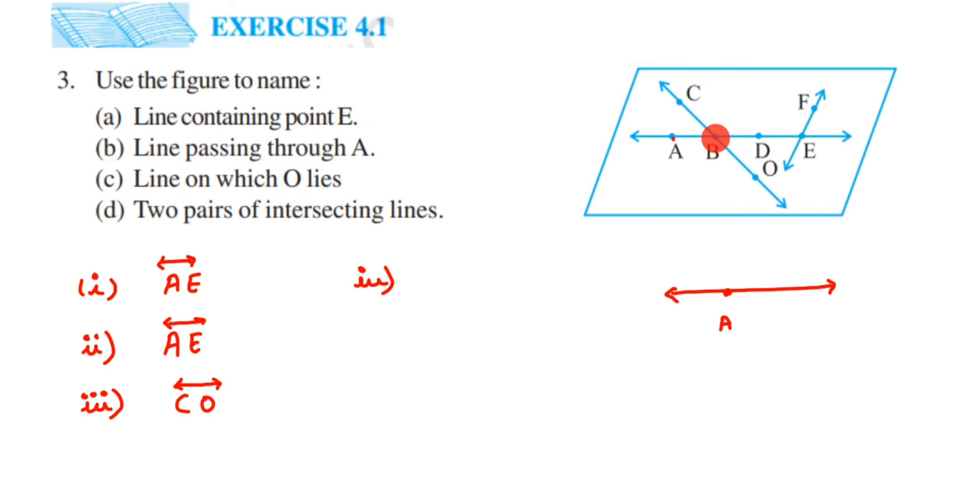The next pair will be this line EF - this vertical line - and this horizontal line AE. There is a common point E here for both the lines. So this will be the second pair here. First pair is CO and AE. The next will be EF and AE.